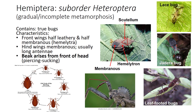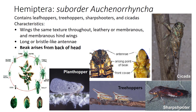Fun fact: predatory bugs have a three-part beak, while plant-feeding bugs have a four-part beak. The next two suborders were originally in the order Homoptera, which means same wing, but have now been lumped into Hemiptera. Some identifying characteristics are that their wings have the same texture throughout — leathery or membranous — and membranous hind wings. Their antennae can be long or bristle-like, and unlike suborder Heteroptera, the beak arises from the back of the head. All insects in this group feed on plant juices, and some cause significant damage or even vector pathogens, such as the glassy-winged sharpshooter that vectors a bacterium called Xylella fastidiosa, causing devastating diseases like Pierce's disease of grape.